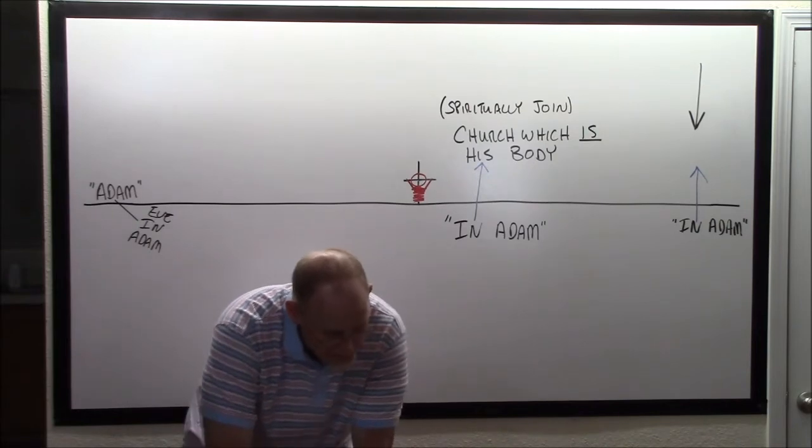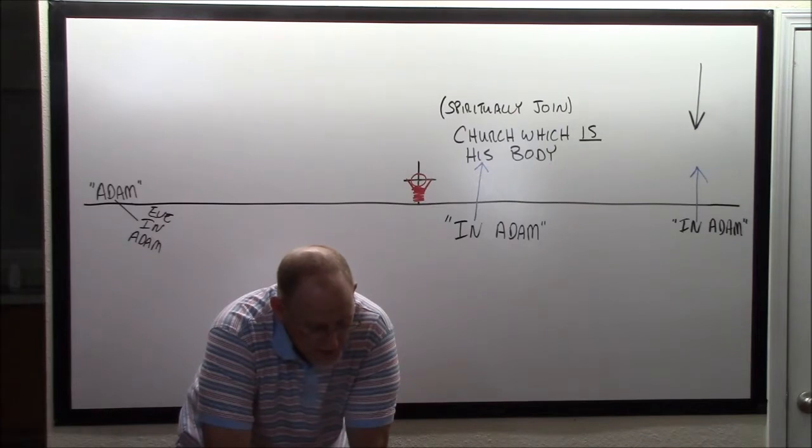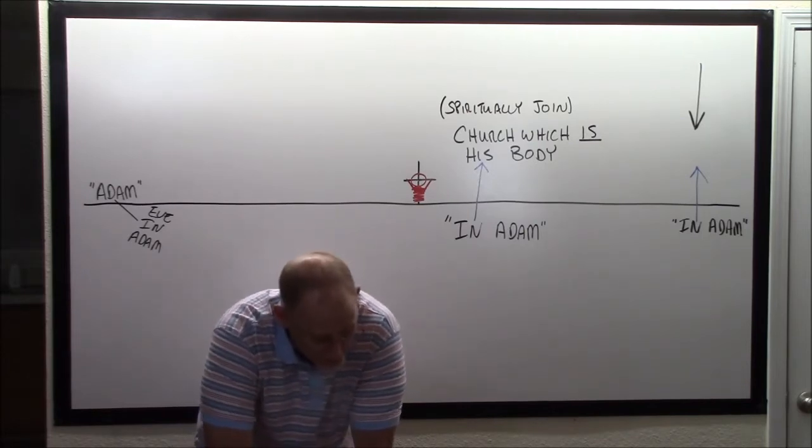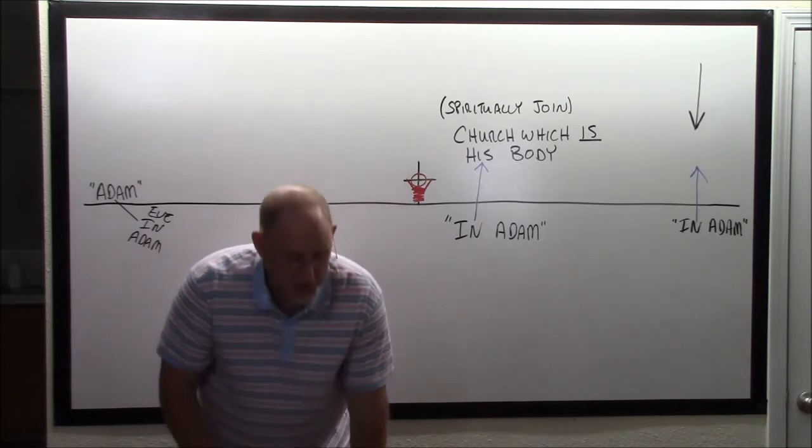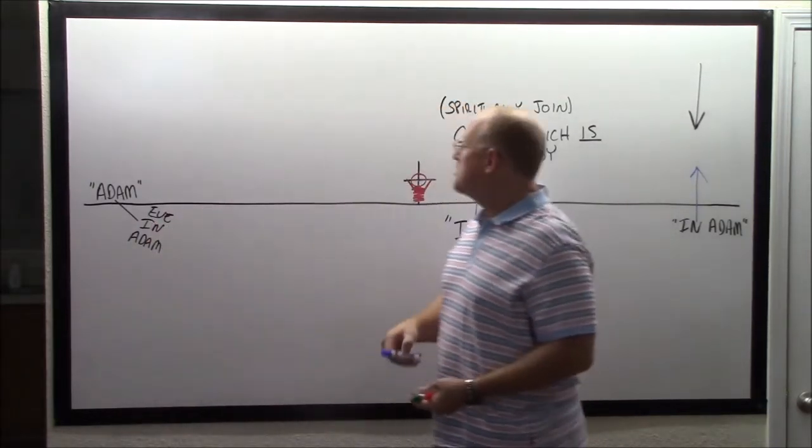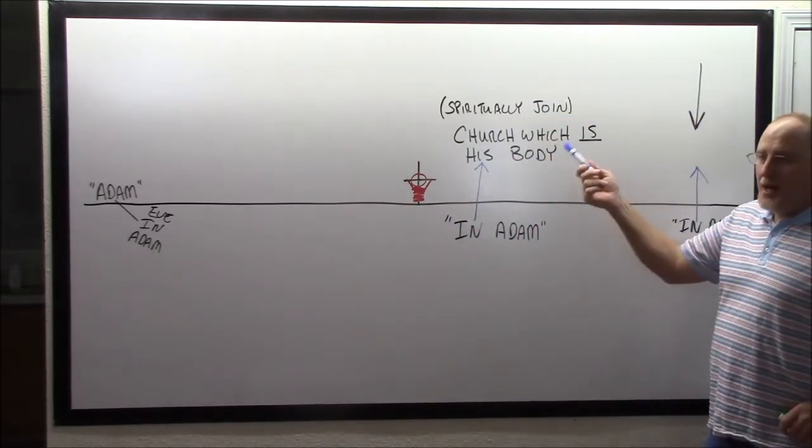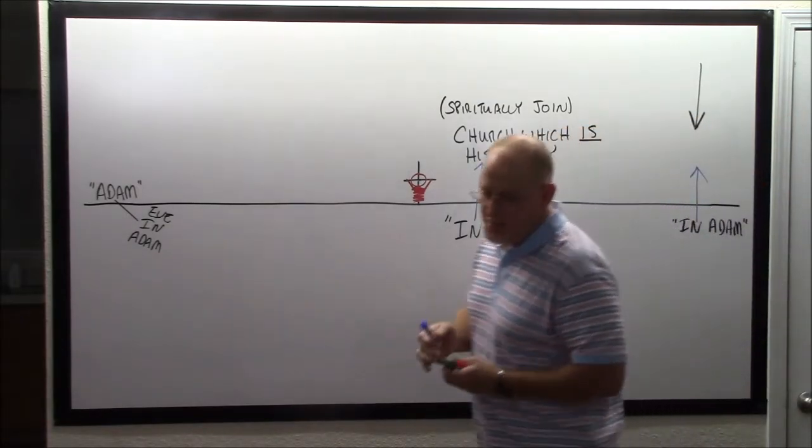Adam said, This is now bone of my bones and flesh of my flesh. She shall be called woman because she was taken out of man. Therefore shall a man leave his father and mother and shall cleave unto his wife, and they shall be one flesh. When did the two become one? When they merged. How did the church get to be his body? By marriage, by a spiritual union.